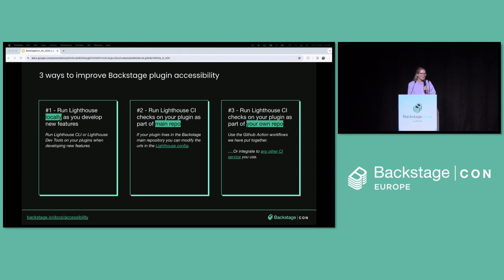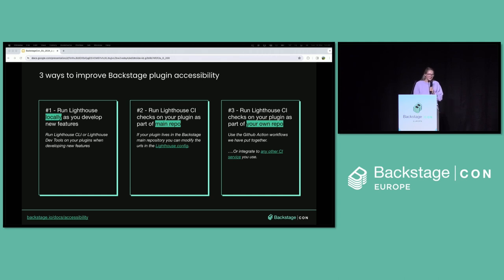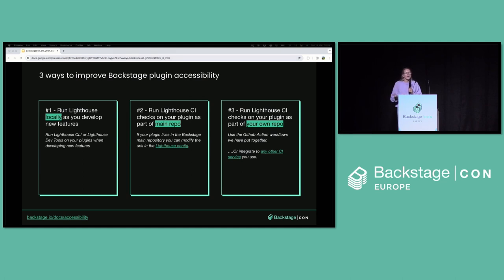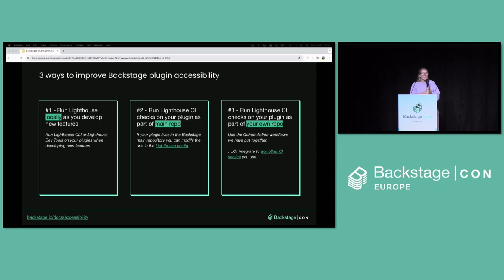Three ways you can improve accessibility on your Backstage plugins: First, you can run Lighthouse DevTools or Lighthouse CLI on your plugin as you develop them, which means you'll catch issues early on. Second, we already configured Backstage's main repo to run these checks in CI, so you can add your plugins — if they live inside the main repo — to this configuration so it will automatically run on your plugins as well. But if your plugins live outside the main repository, you can use the CI checks we've put together with GitHub Actions and move them over to your repo. If you're not using GitHub Actions, you can look at the official Lighthouse documentation to see which other providers they support. We have more documentation at backstage.io/docs/accessibility if you want to read more.